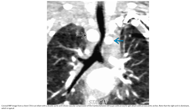Coronal MIP imaging from a chest CTA demonstrates a double aortic arch showing cross-sectional compression of the trachea between the left and right aortic arches. Note that the right arch is dominant with its typical appearance.